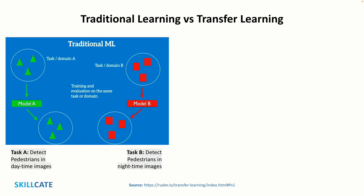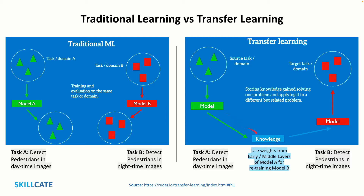In the classic supervised learning scenario of machine learning, if we intend to train a model for some task A, we assume that we are provided with enough labeled data for the same. Then we go ahead and train model A on this dataset and expect it to perform well on the unseen data. Let's say the task here is to detect pedestrians in daytime images. On another occasion, for some task B in the same domain of object detection, we again require labeled data to train a new model B — to detect pedestrians in nighttime images. Here, this traditional supervised learning paradigm breaks down if we do not have sufficient labeled data to train a reliable model B. With transfer learning, we may reuse the knowledge gained in solving task A and apply this knowledge to task B, requiring only a small dataset for this retraining.